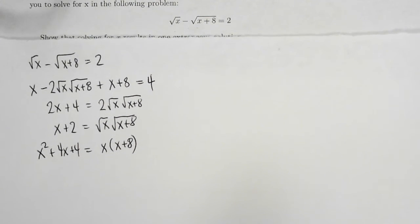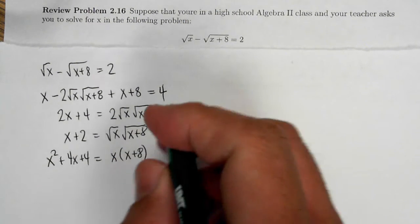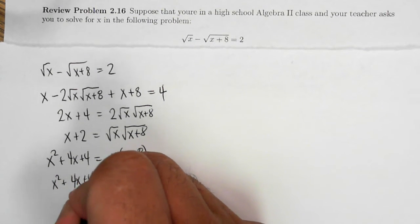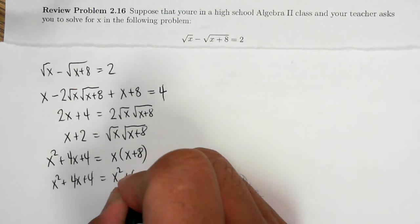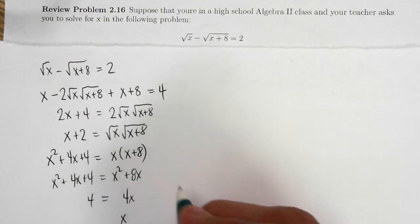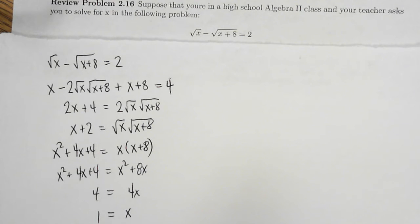And so solving for x, we get x squared plus 4x plus 4 is equal to x squared plus 8x. And so we get 4x is equal to 4 which makes x equal to 1. And so it looks like x equals 1 is the solution.